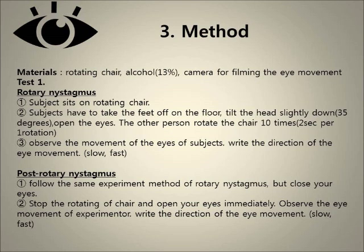Test 1 is Rotary Nystagmus and Post-Rotary Nystagmus. The subject sits on a rotating chair, takes their feet off the floor, tilts the head slightly down, and opens their eyes. Another person rotates the chair 10 times at 2 seconds per rotation. Observe and write down the direction of the eye movement, and note whether the movement is fast or slow.